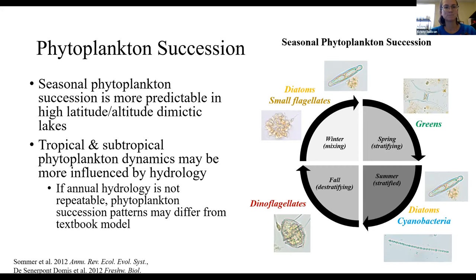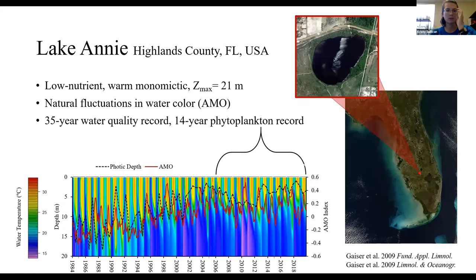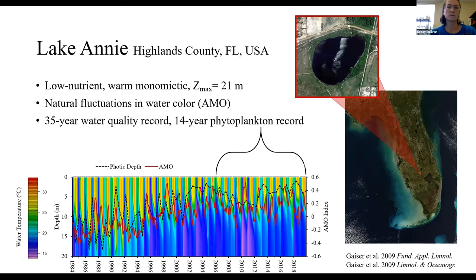My study site is Lake Annie — a low-nutrient, warm monomictic lake. While its surface area is pretty small, it has a maximum depth of 21 meters, which is fairly deep. As previously mentioned, the lake experiences natural fluctuations in water color in relation to the Atlantic Multi-Decadal Oscillation. We have a 35-year water quality record for the lake and a 14-year monthly phytoplankton record, which are the data I'll be discussing today.